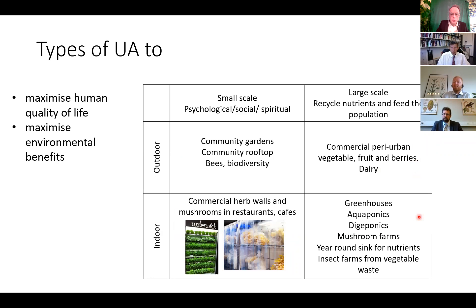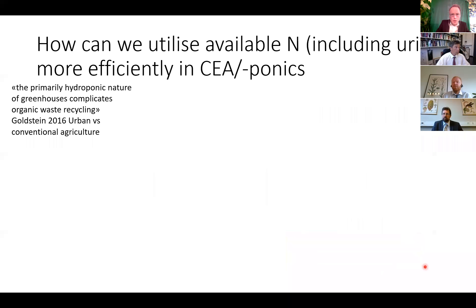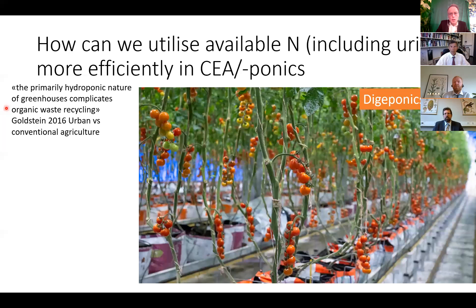Indoors there is a range of possibilities with greenhouses, aquaponics, digiponics — which is Lindum's invention — and mushroom farms, serving as a year-round sink for nutrients. Growing insects from vegetable waste is also useful, as Till found. According to Goldstein, the primarily hydroponic nature of greenhouses complicates organic waste recycling. To solve this we developed digiponics — a kind of organic hydroponic growing technique entirely based on waste, using digested food waste and composted green waste.